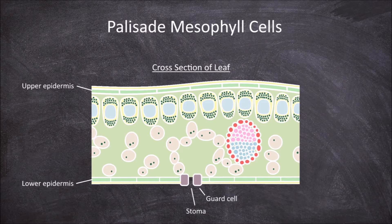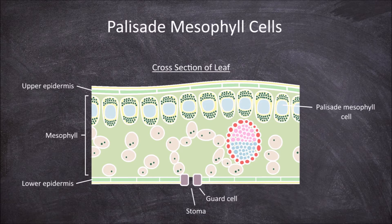Within the leaf you have the mesophyll. Palisade mesophyll cells are found tightly packed in the upper region of the mesophyll. They are packed with chlorophyll and their function is being the main site of photosynthesis.